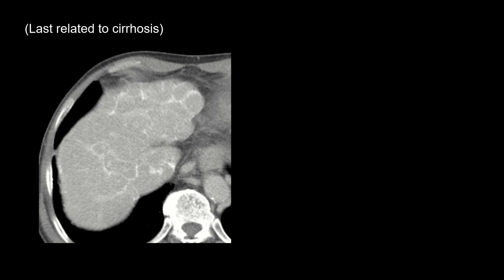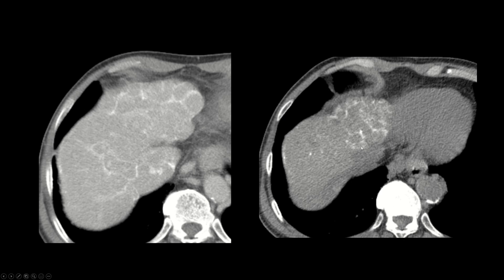The last background liver finding on CT worth mentioning is this, because it's pathognomonic. This is a post-contrast acquisition — you'll notice high attenuation linear findings in the liver that are relatively peripheral. On the non-contrast acquisition in the same patient, all of these were, in fact, calcifications. This is called the turtle back liver sign, and it is classically seen in schistosomiasis.